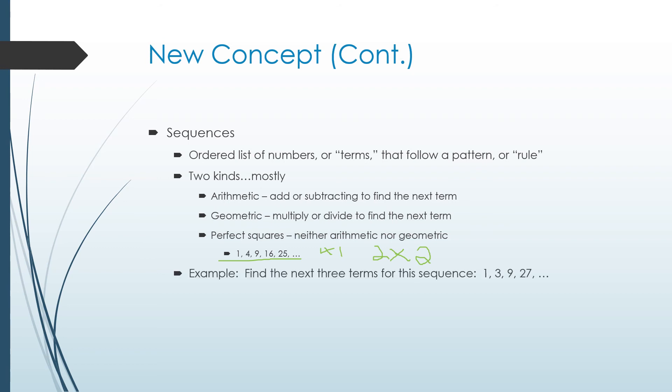So here's an example of a sequence. One, three, nine, twenty-seven. You have to figure out, well, how are we counting here? And I know this would be plus two. This would be plus six. This would be plus twenty-one. So it's obviously not adding every time. So it must be a geometric sequence. It must be multiplying. So we figure out, oh, we're multiplying by three. So this is a geometric sequence.